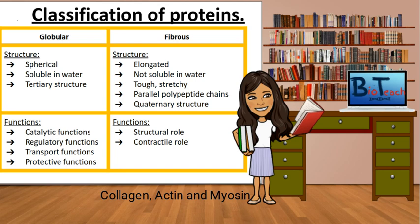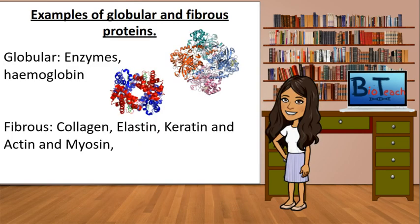We can look at three examples of fibrous proteins. Collagen is the main component of connective tissue and is mostly found in fibrous tissues, for example, tendons or ligaments and skin.